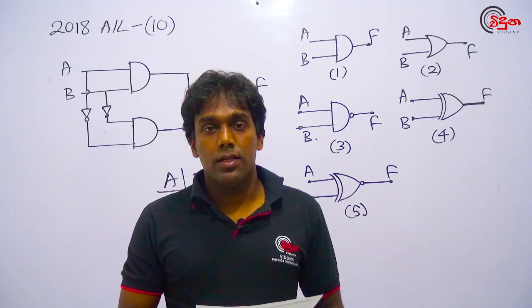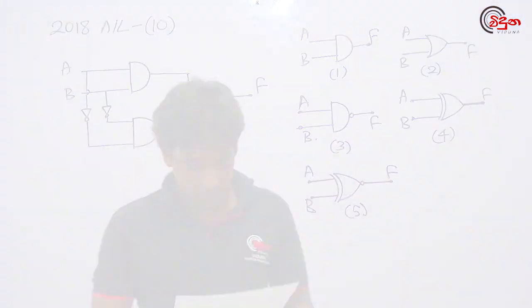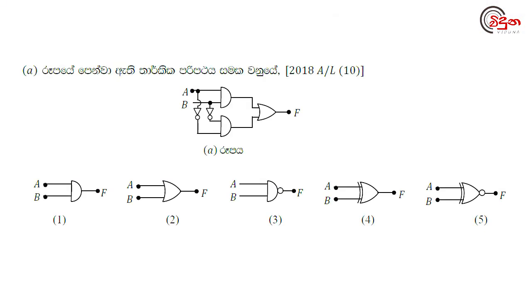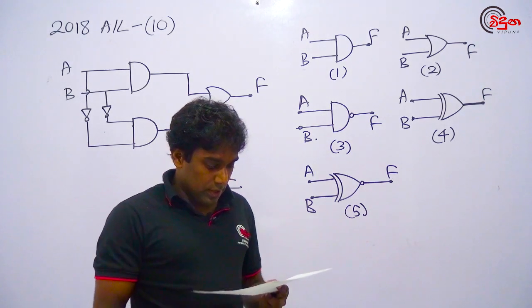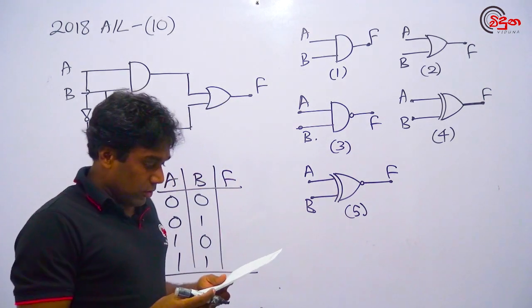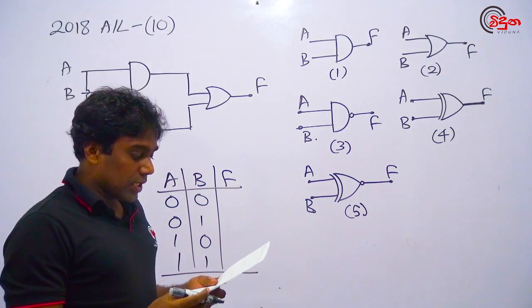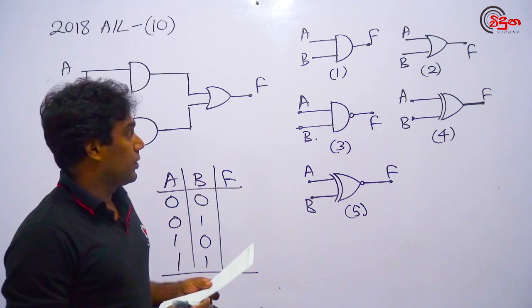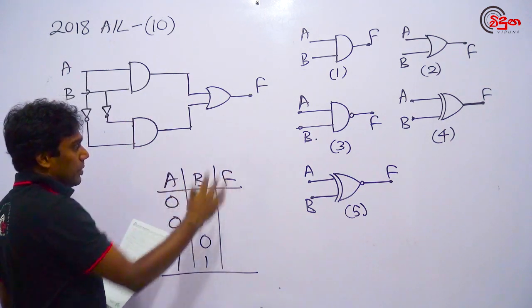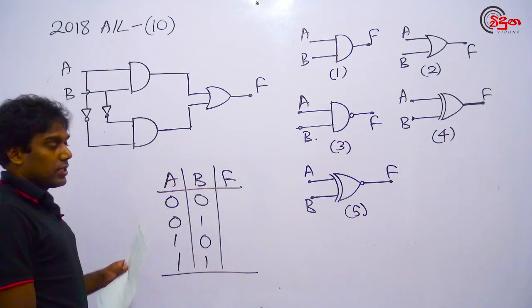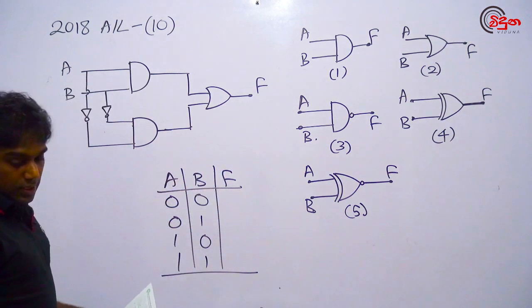A level is a level. What are the methods? To make a method is to make a method. You can make a method for this method. You can find a method for this method.